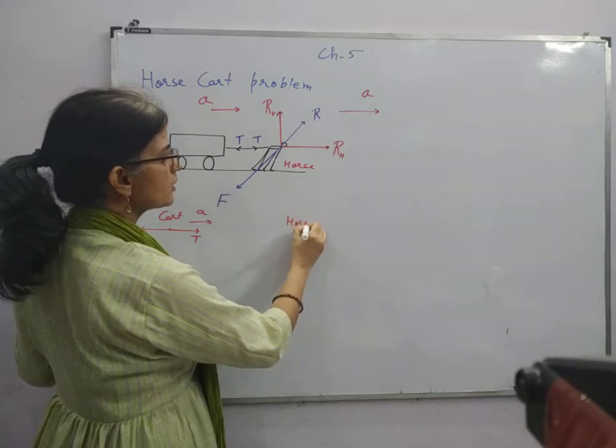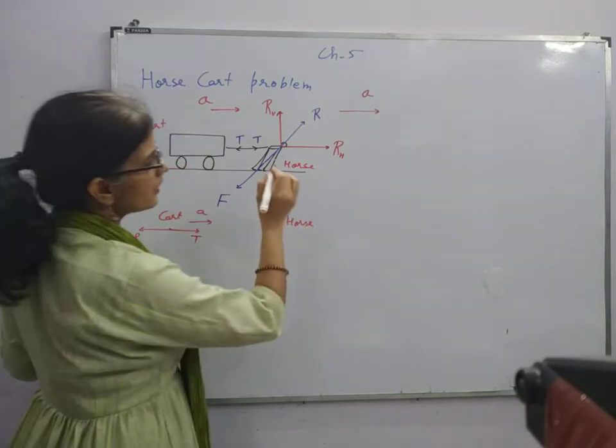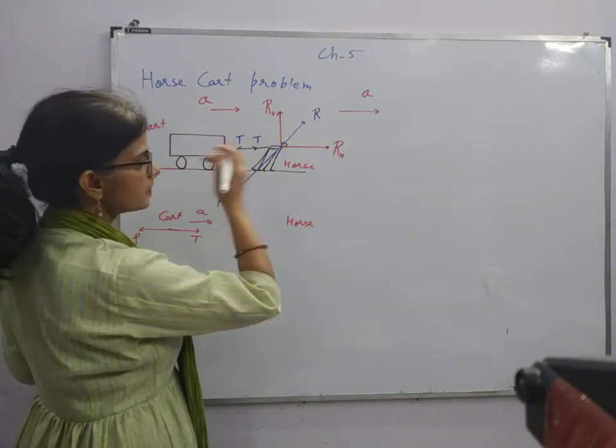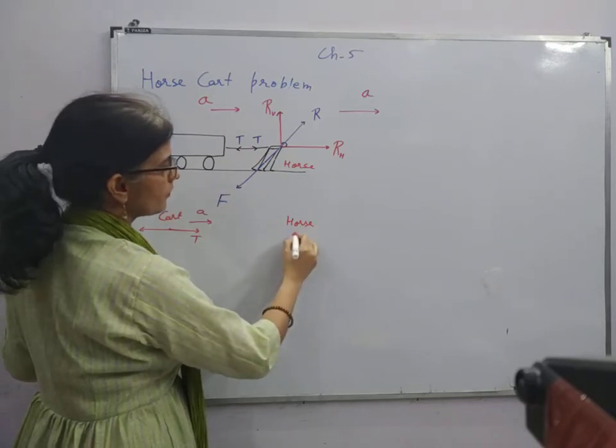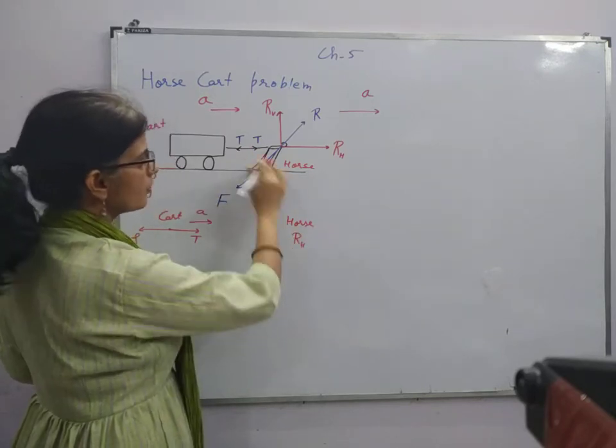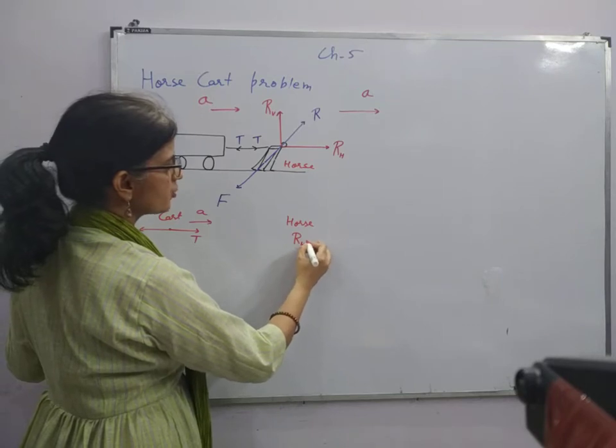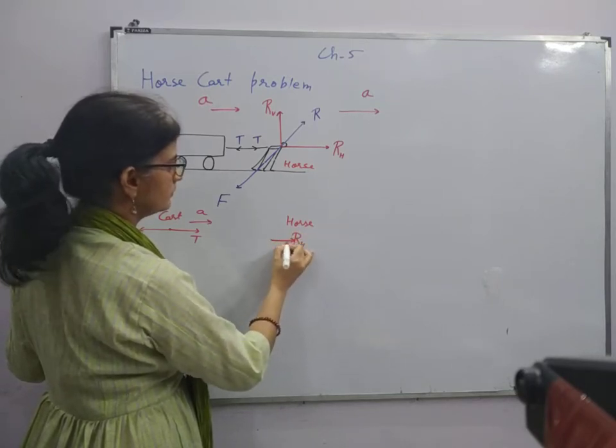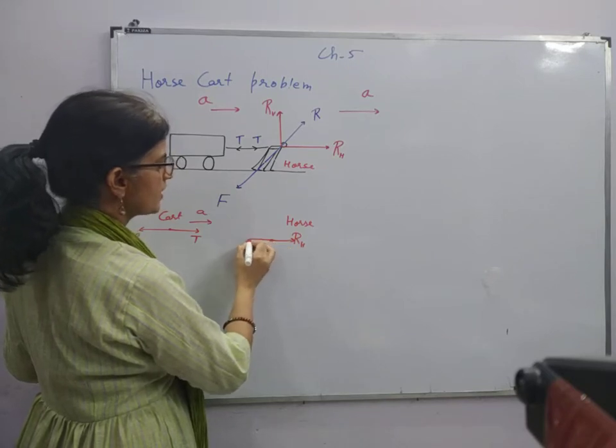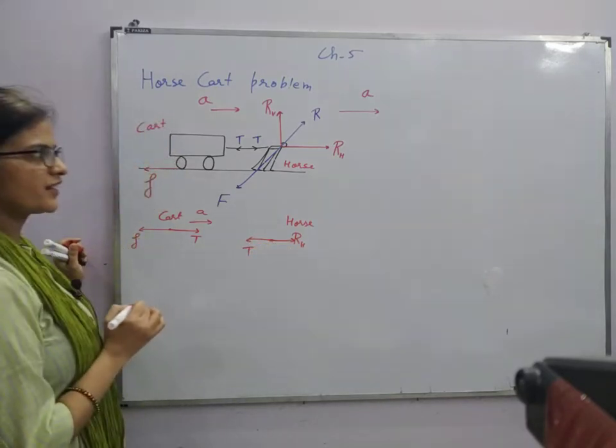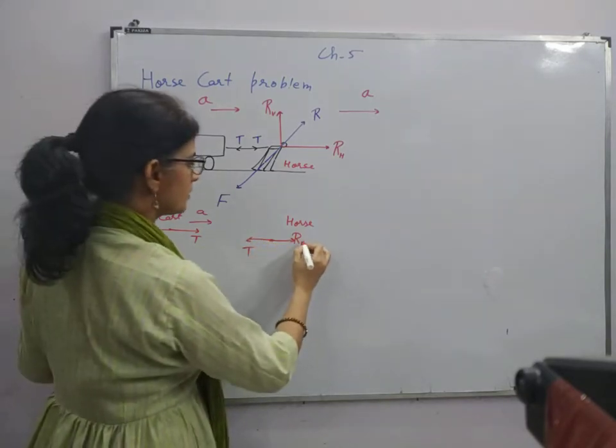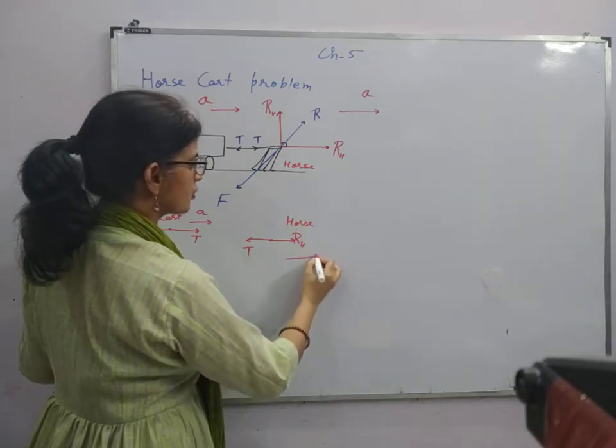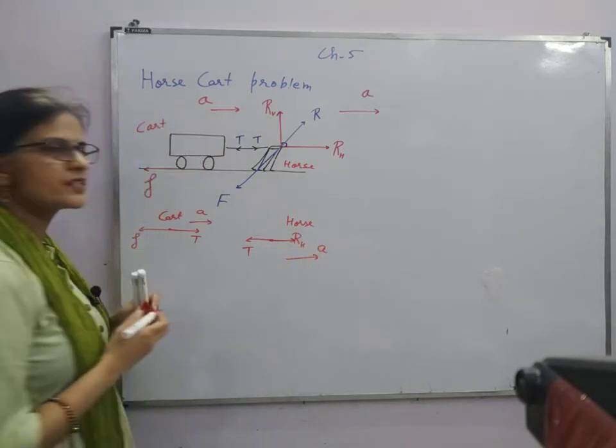If we talk about the horse, it is having this horizontal component in this direction, tension in backward direction, and the system is moving with acceleration A in this direction.